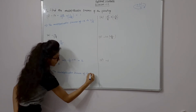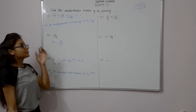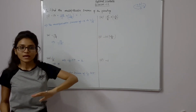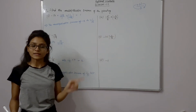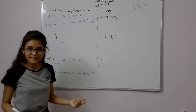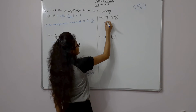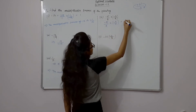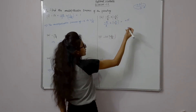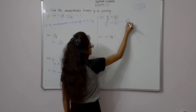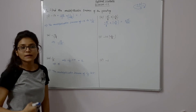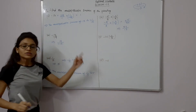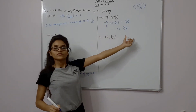Similarly, fourth part — you can see two rational numbers given in multiplication. To find the multiplicative inverse, first multiply the two rational numbers, then find the multiplicative inverse of the result. So minus 5 upon 8 into minus 3 upon 7: minus 5 into minus 3 is plus 15 (minus × minus = plus), and 8 into 7 is 56. So we get plus 15 upon 56, whose multiplicative inverse is 56 upon 15.